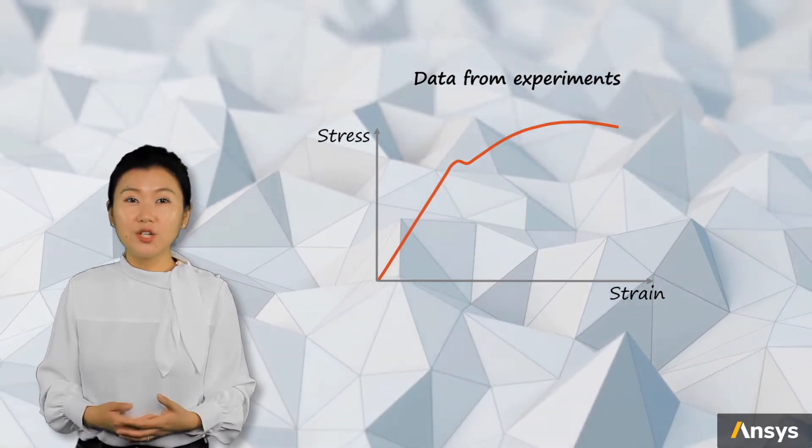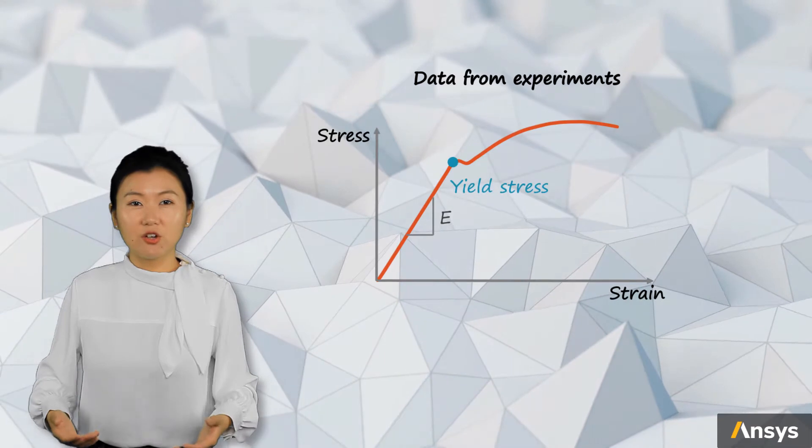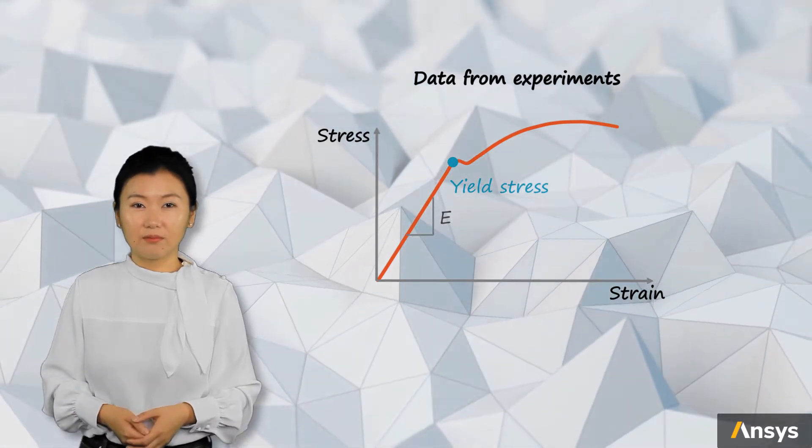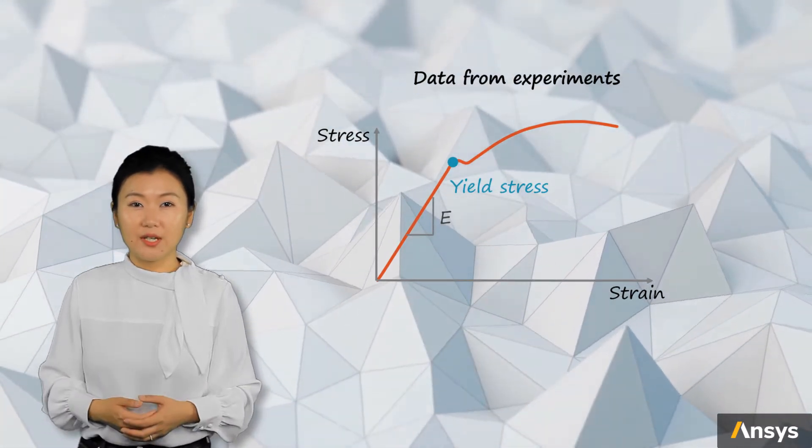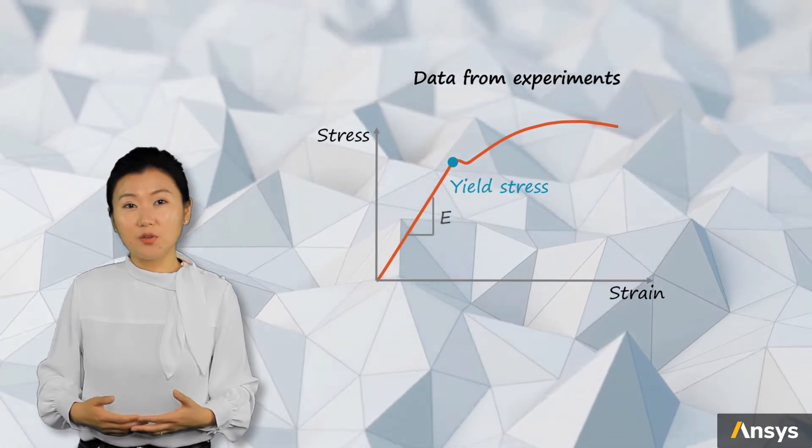First of all, we need to define the yield point where the material starts plasticity. Before the yield point, the stress-strain curve should be almost a straight line.